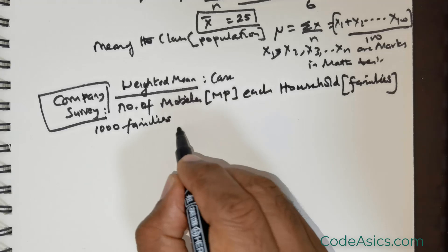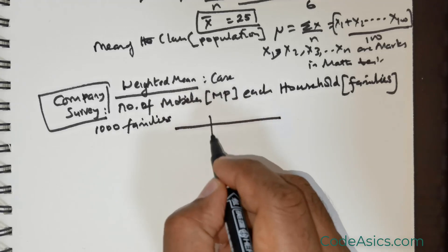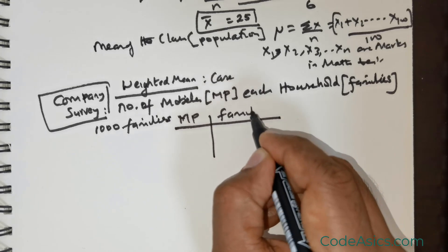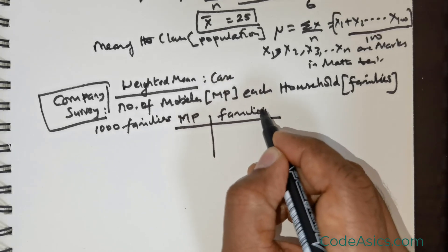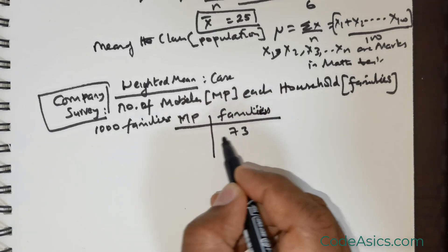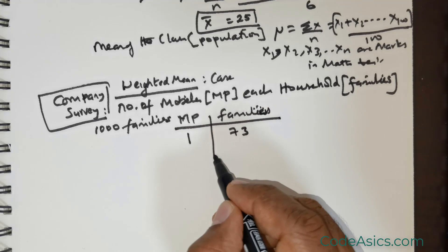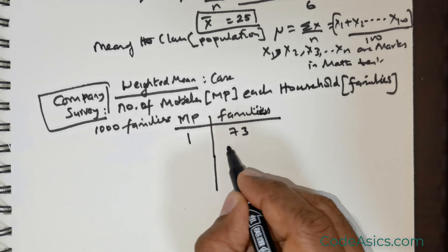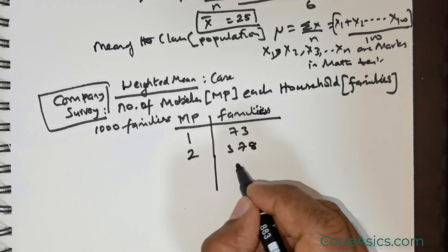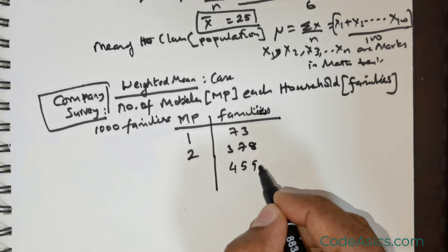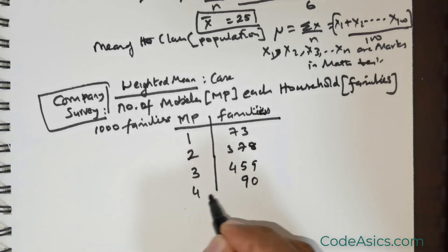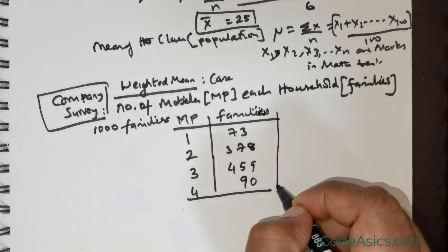So this is the data they have got - mobile phones and families. What they have found is that 73 families have one mobile phone, 378 families have two mobile phones, 459 families have three mobile phones, and 90 families have four mobile phones. This is the data they have collected.